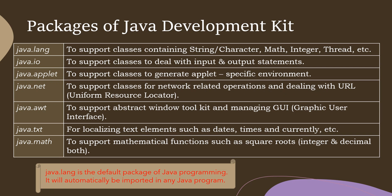Now we will see the various packages available in the Java Development Kit (JDK). The first one is java.lang, which supports classes containing String, Character, Math, Integer, Thread — almost everything you are going to use in the program. Java.lang is the default package of Java programming, so it is automatically included in any Java program and you do not need to specify it.